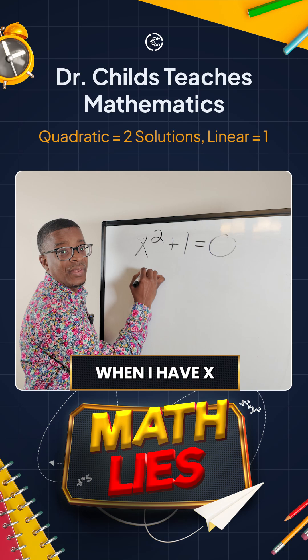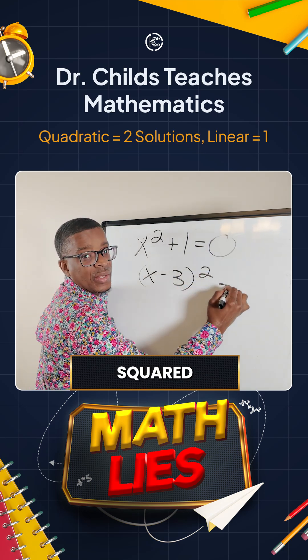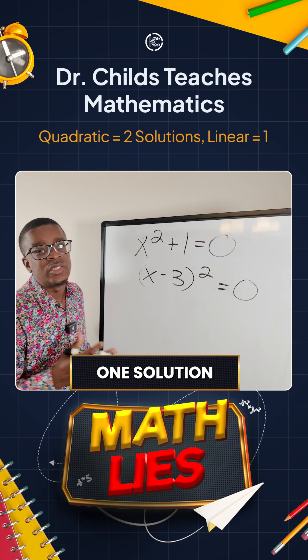Now, when I have x minus 3 squared equals 0, I'm going to get one solution when I do that one.